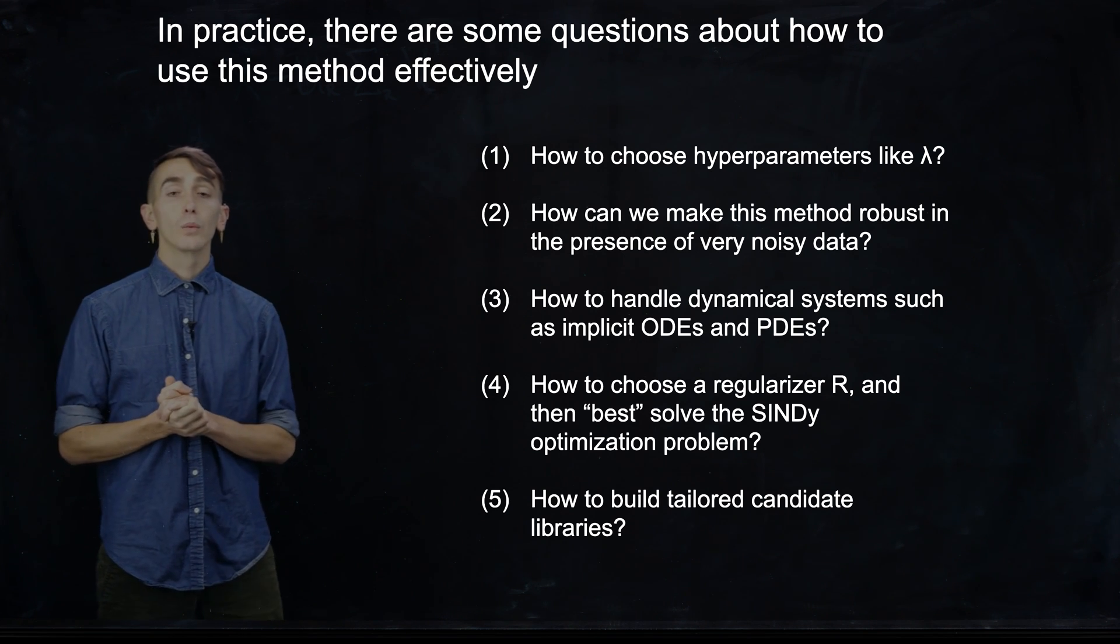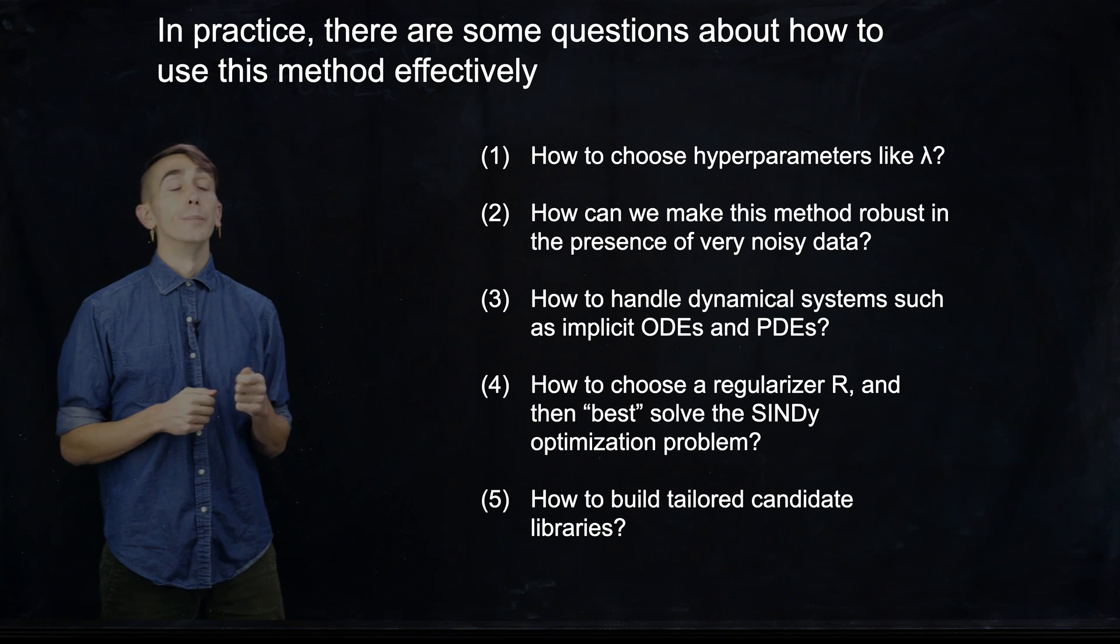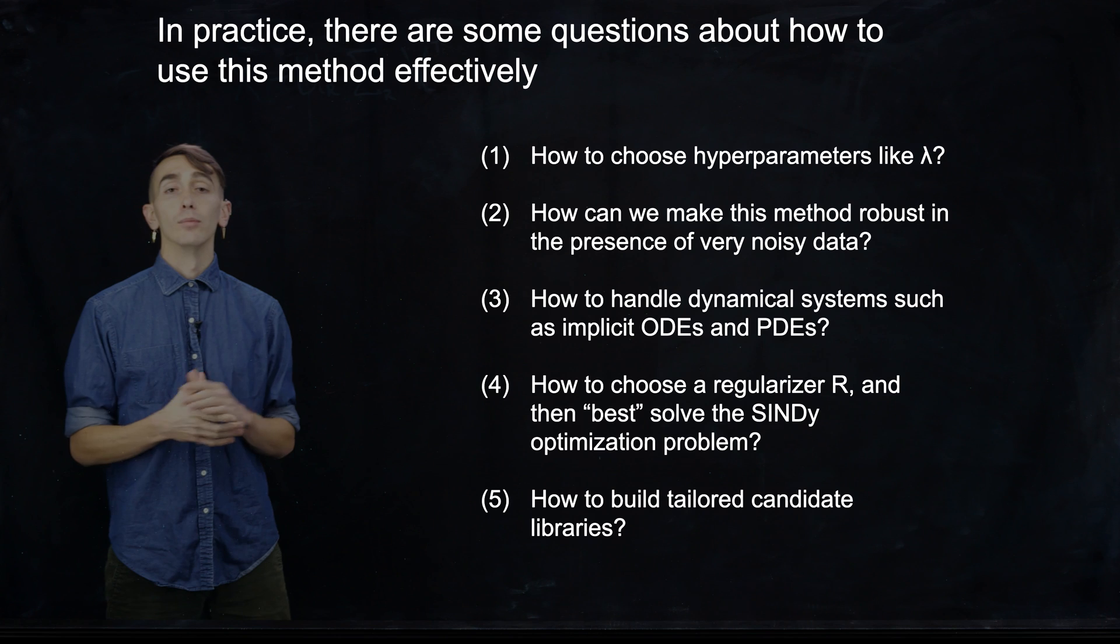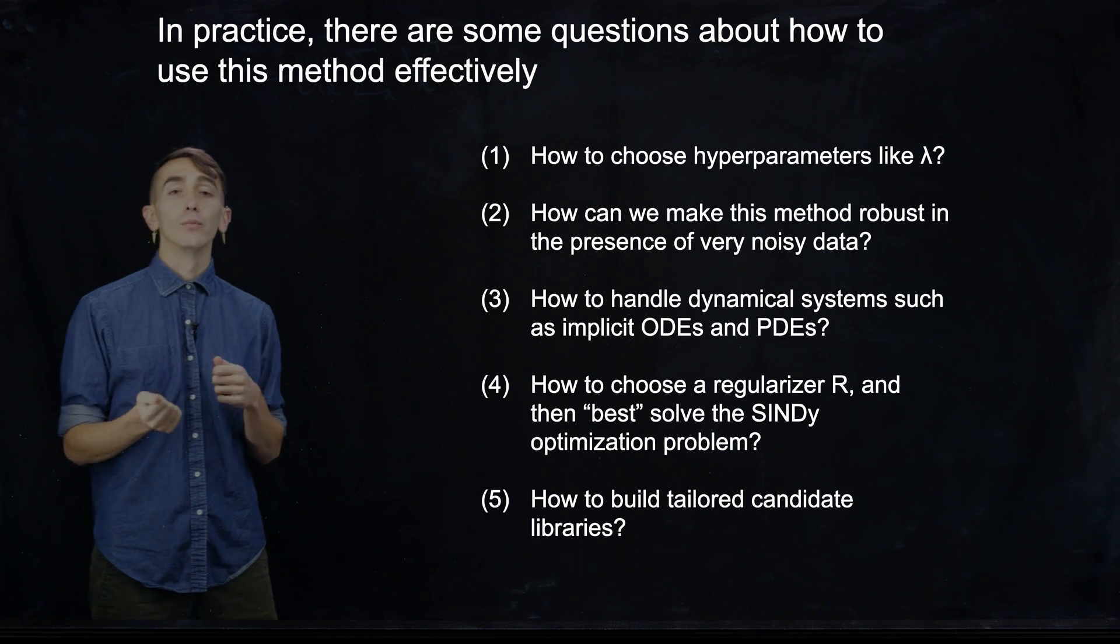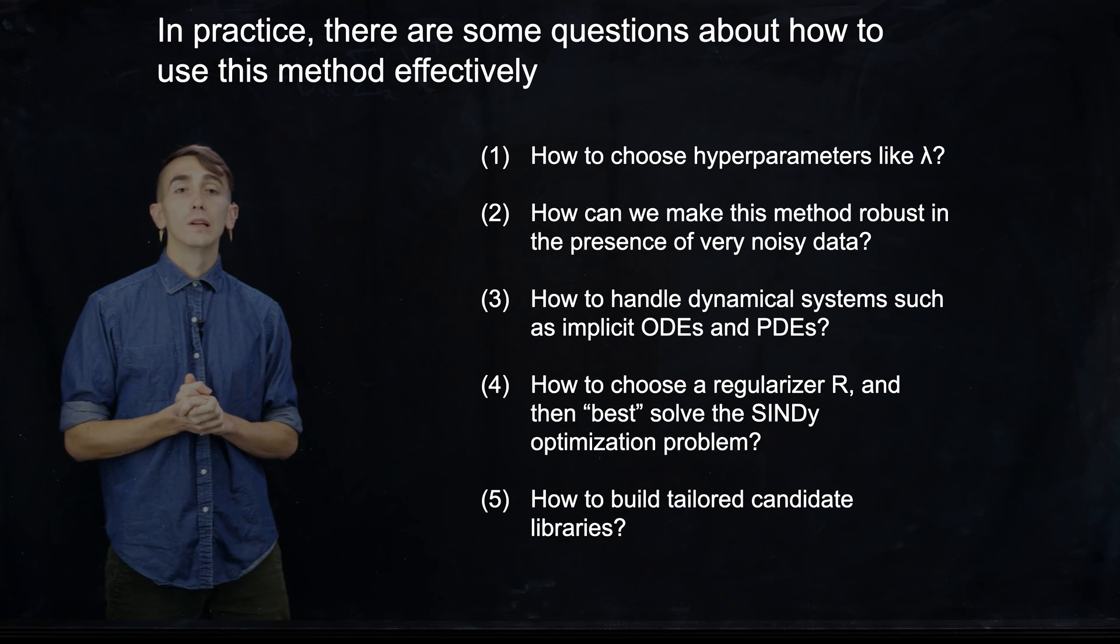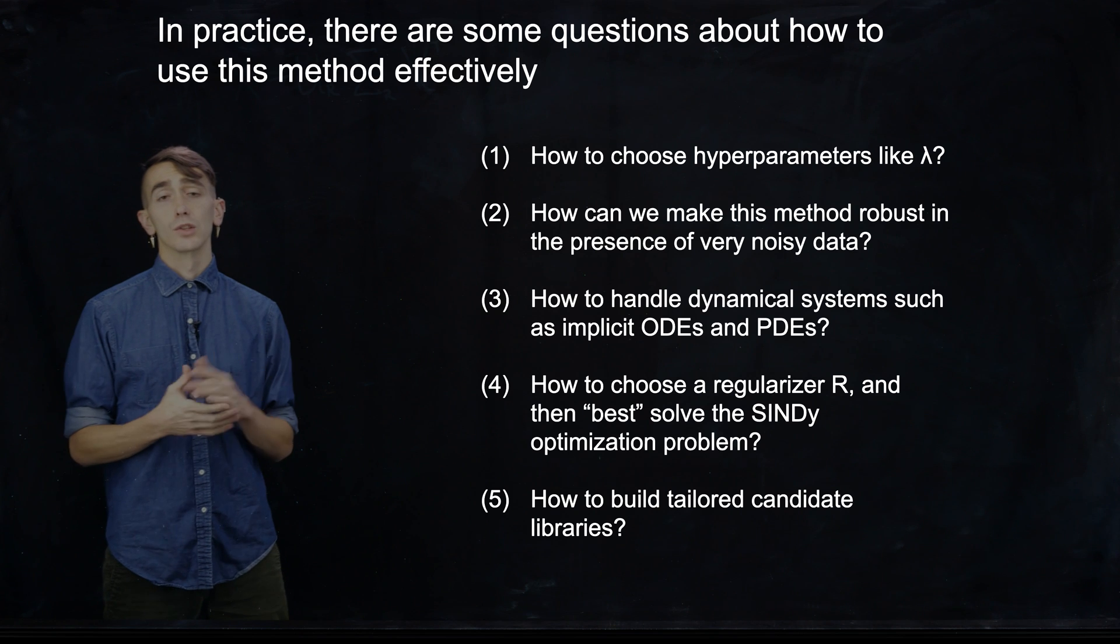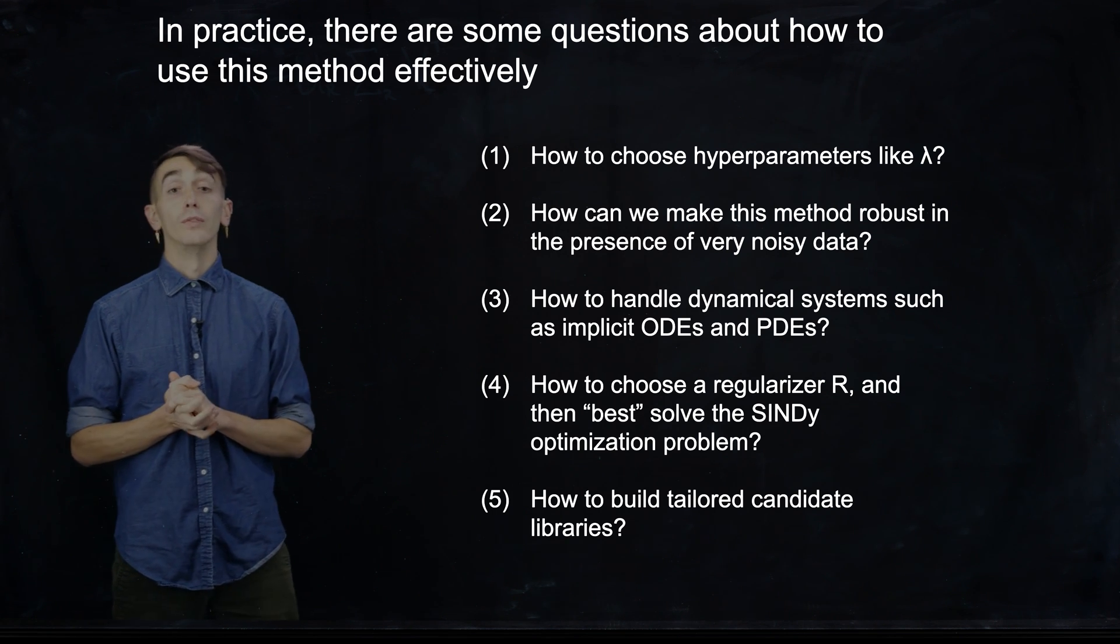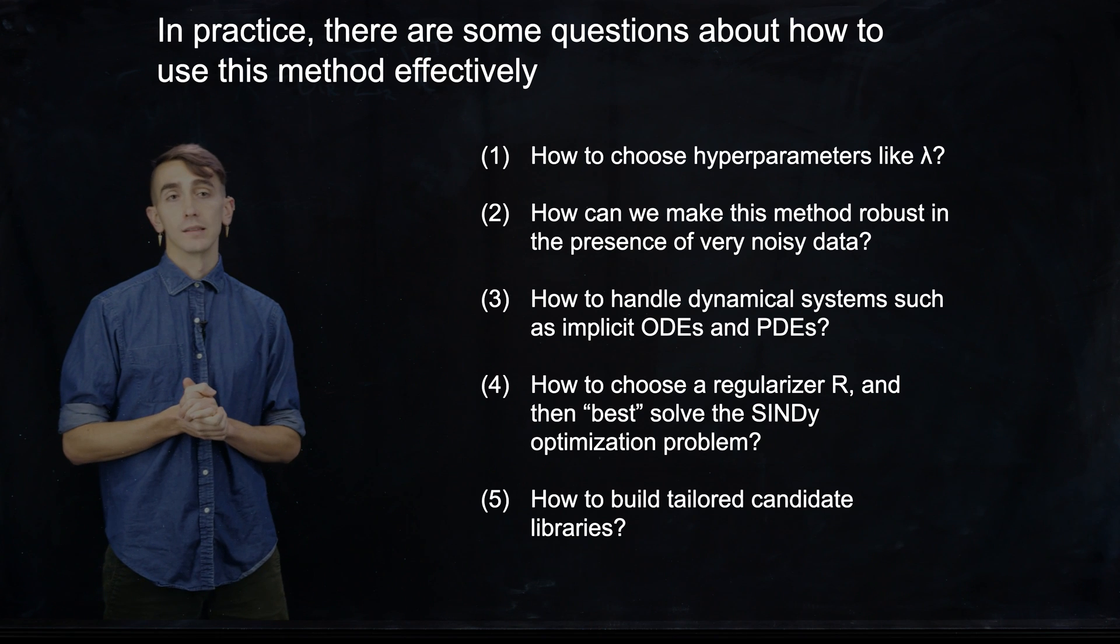So we really would like to be able to make these feature libraries or candidate libraries, we want to be able to tailor them really precisely to only include the types of terms we would expect to show up in the dynamical system. And I'll show some advanced functionality that lets you build very general or very tailored candidate libraries in the PySINDy code.